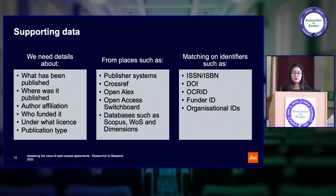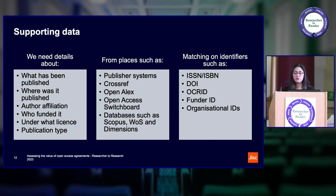We can use multiple sources to do that. We create our own datasets internally, and we also work with other systems and are looking to expand those integrations. We work with publisher systems, Crossref, OpenAlex, Open Access Switchboard, and databases such as Scopus, Web of Science, and Dimensions. In order to automate these processes and ensure we're saving time, we need to be able to consistently match on identifiers.